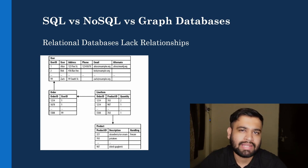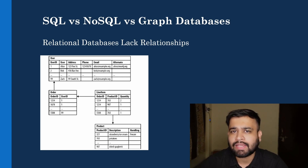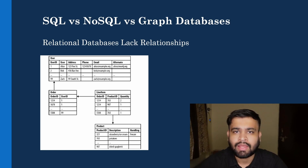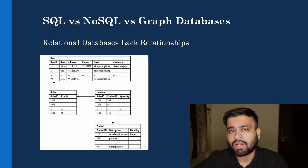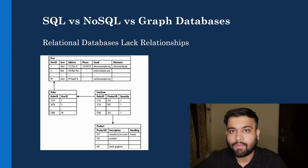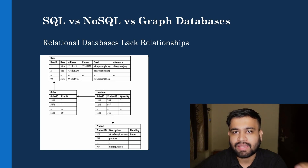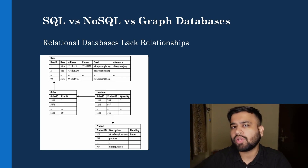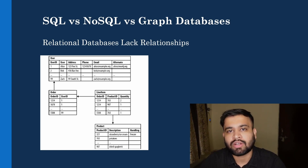You might say that's not impossible — and yes, introducing an index can help execute that query. But consider another scenario: which customers who bought a particular product also bought another specific product? That becomes even more difficult in relational databases. Let's look at a concrete example to see how complexity increases and where graph databases come in to solve the problem.